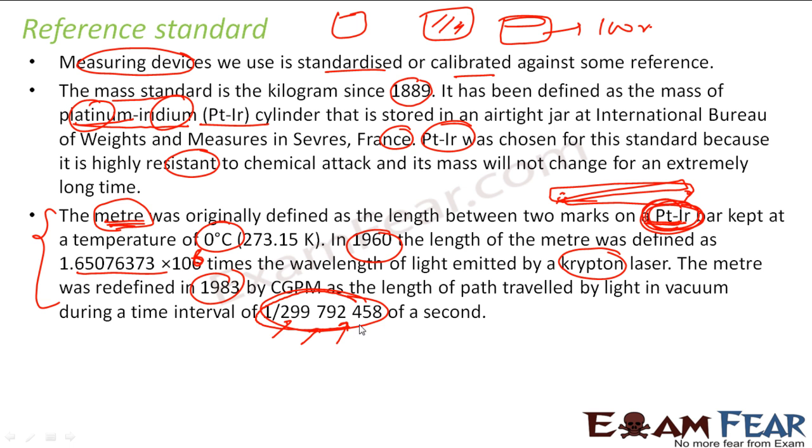In this case, if you see, if you lose this, you are not able to find 1 meter again. But if you lose this platinum bar, you don't have anything - anytime you can find the value of length because the light is available. They keep changing the base.